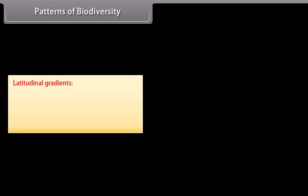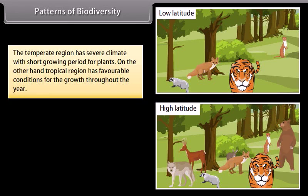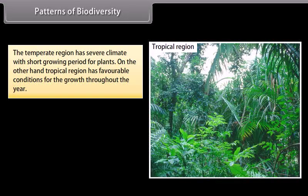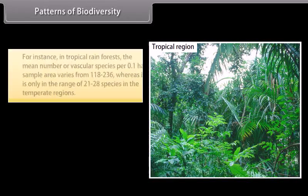Patterns of Biodiversity — Latitudinal Gradients. Biodiversity is not uniform on the earth; it varies with change in latitude or altitude. Biodiversity increases when we move from high to low latitude. The temperate region has a severe climate with a short growing period for plants. On the other hand, the tropical region has favorable conditions for growth throughout the year, favoring speciation and allowing a larger number of species to occur and grow. Therefore, tropical regions are rich in biodiversity.